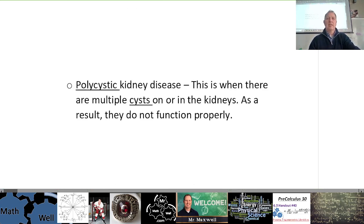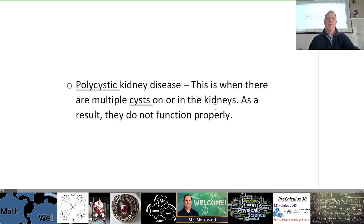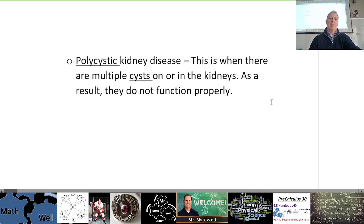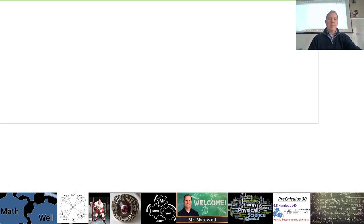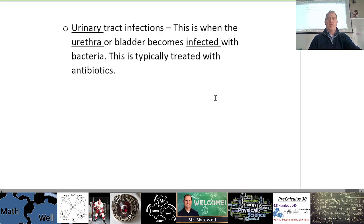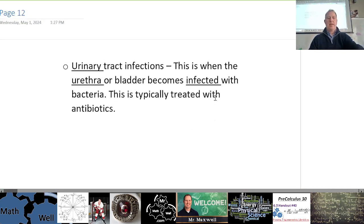Polycystic kidney disease: this is when there are multiple cysts on or in your kidneys. As a result, they do not function properly. Cysts are basically growths. Again, this fine-tuned filtering system is easily affected. We'll pick up the last little part tomorrow — that's where we'll leave it for today.